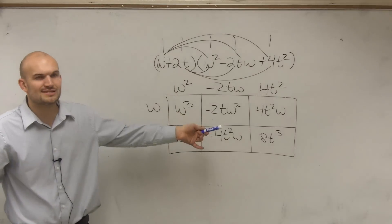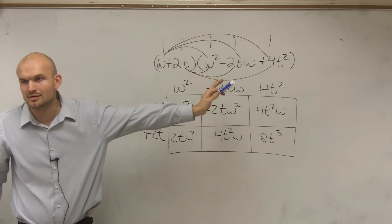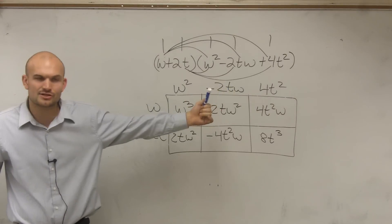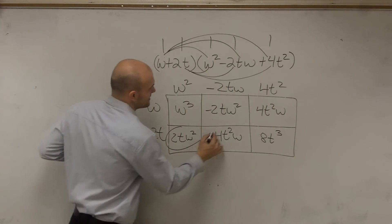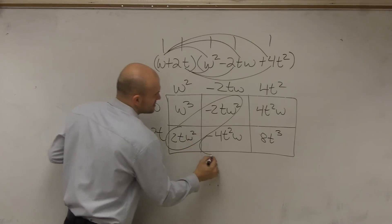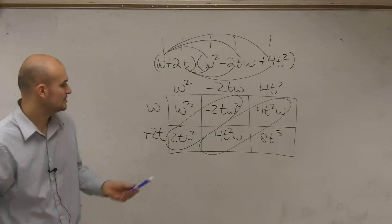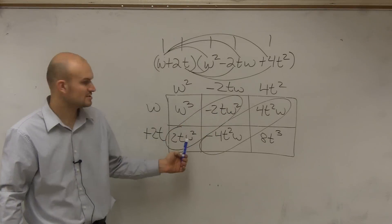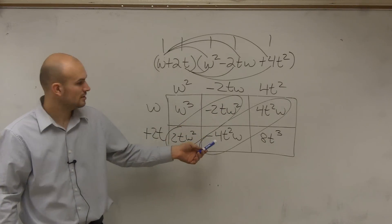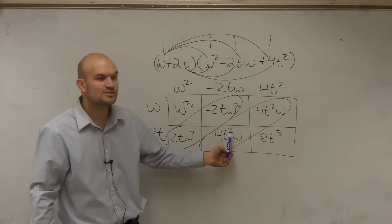But once you write your answer you have this huge long answer and then you've got to combine like terms and a lot of students make mistakes. What's nice about this method is your like terms are usually in a diagonal with each other. Don't these have the same variable factors, t and w squared? Do these have the same variable factors, t squared w? Yeah.